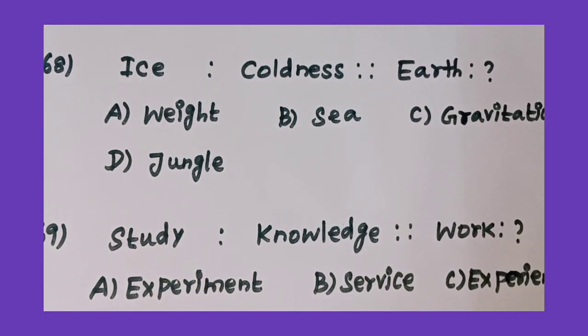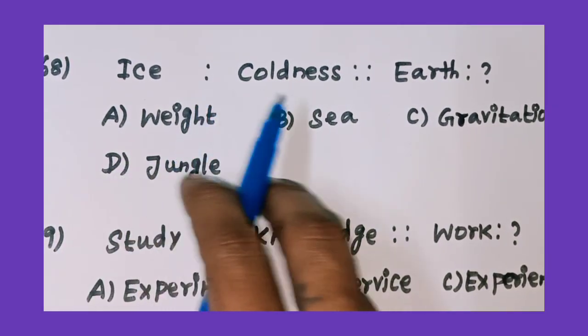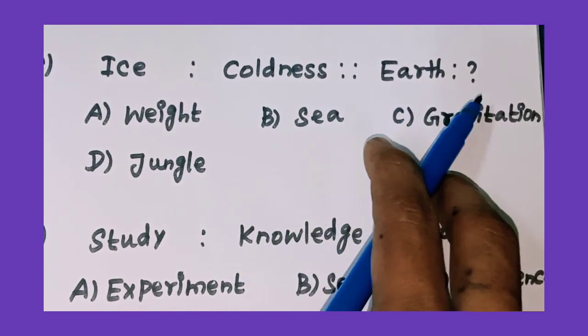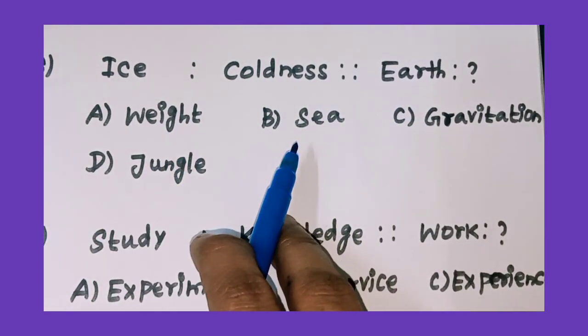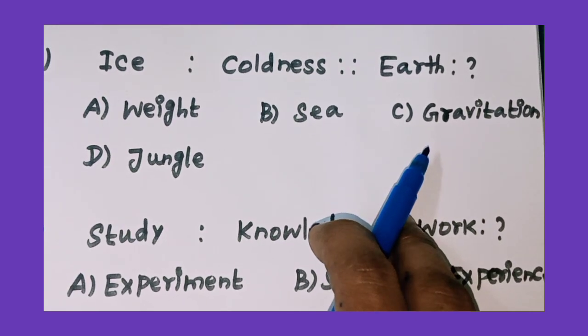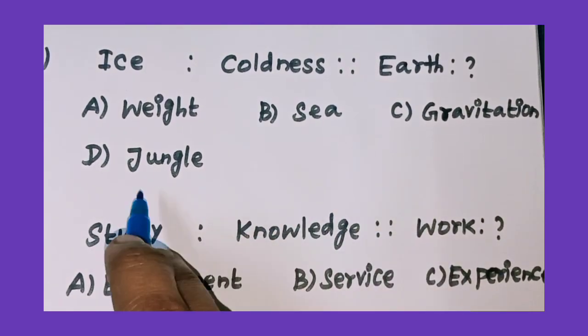68th question: ice is to coldness as earth is to what? Option A: weight, option B: sea, option C: gravitation, and option D: jungle.